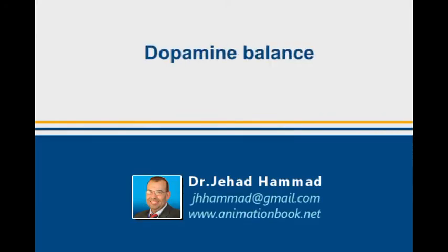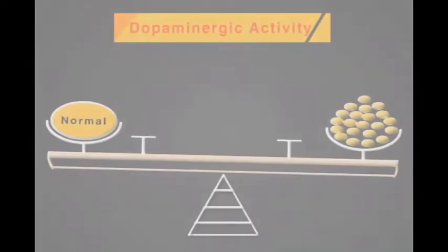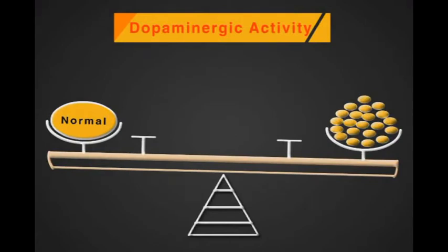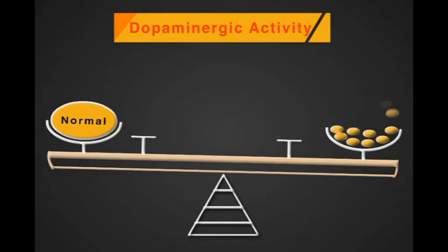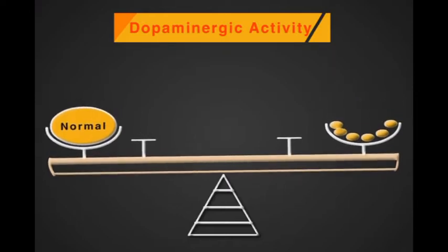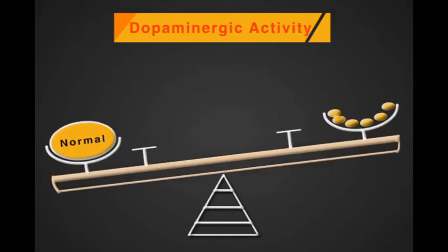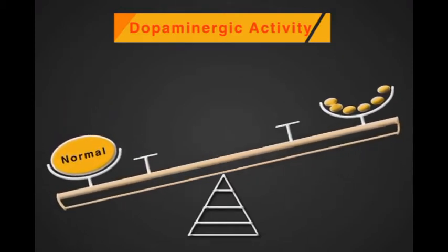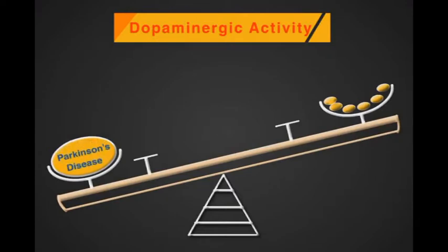Dopamine balance: Dopaminergic activity in the healthy central nervous system is under tight control. Decreasing the dopaminergic activity, either by low dopamine molecule concentration or by destruction of dopaminergic neurons, leads to pathological conditions such as Parkinson's disease.